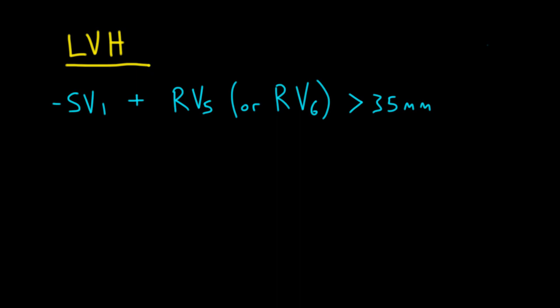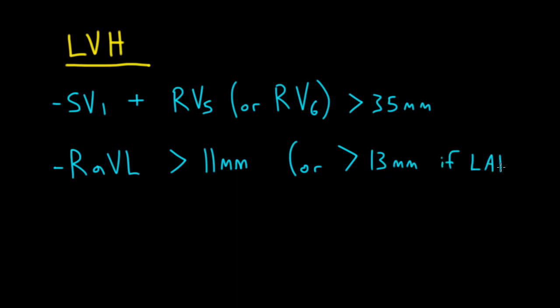With LVH there are a number of diagnostic criteria, and it's helpful to memorize at least two. In addition to the precordial lead criterion, a useful limb lead criterion is to look in lead AVL and see if the height of the R wave is taller than 11 millimeters. Lead AVL gives us the best view of the left side of the heart in the frontal plane, so with LVH the forces are more positive there. When you have left axis deviation, the threshold becomes higher — you'll need an R wave taller than 13 millimeters in lead AVL to call something LVH.